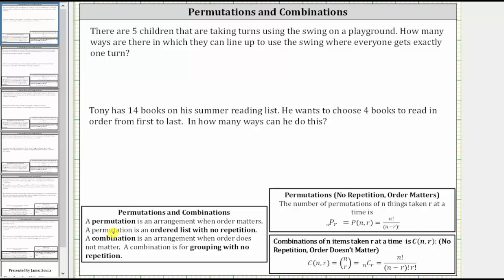In our first example, there are five children that are taking turns using the swing on a playground. How many ways are there in which they can line up to use the swing when everyone gets exactly one turn? The order of the lineup matters, there is no repetition, and therefore this is an example of a permutation.